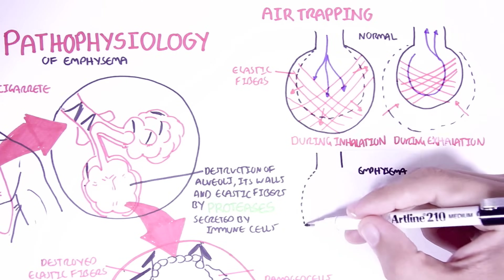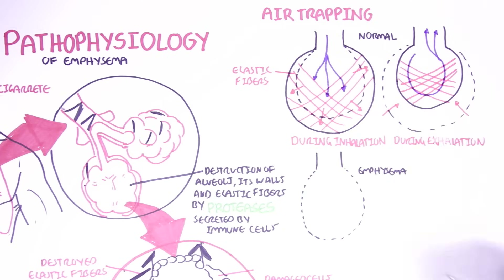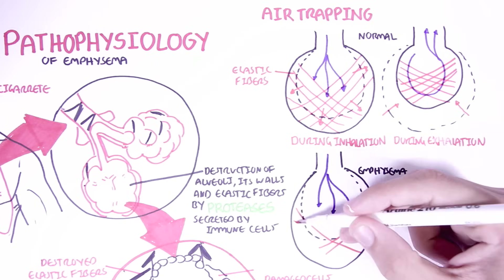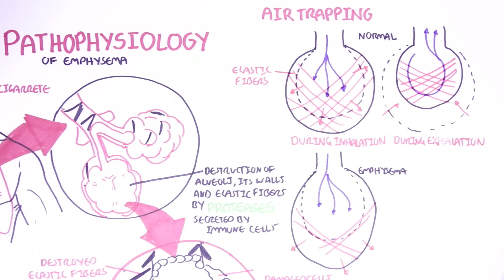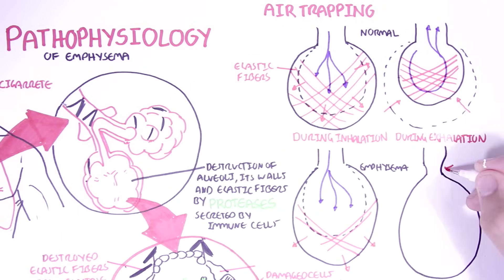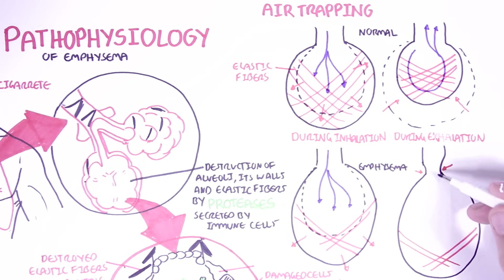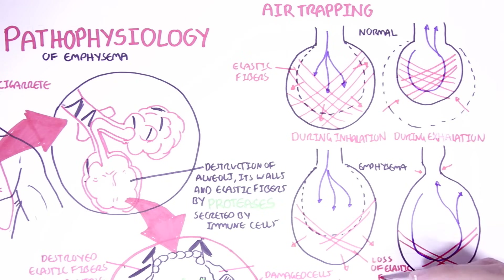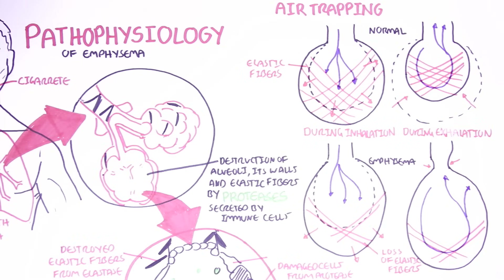Now let's look at lungs with emphysema. During inhalation, the alveolus is able to expand only with force, because the elastic fibers have been destroyed. Also, the loss of elasticity in the bronchioles will cause the bronchioles to become more narrow during inhalation. During exhalation, the narrowing of the bronchioles combined with the absence of a recoil system — caused by destruction of the elastic fibers — will cause air to be trapped, making it hard to breathe out.